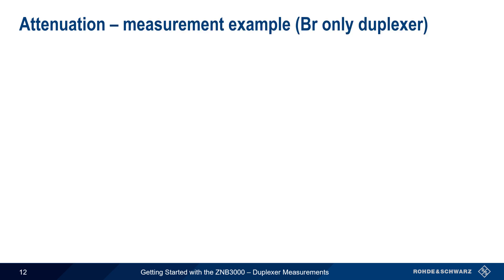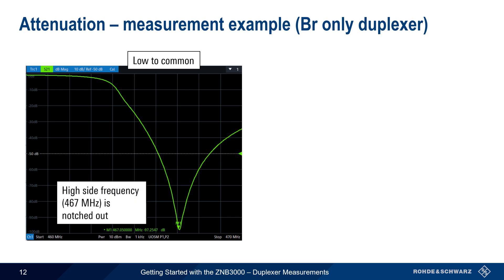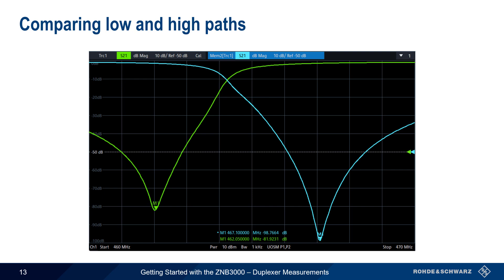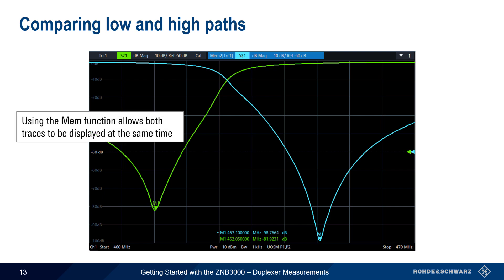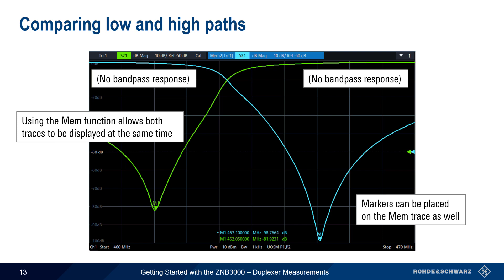Our first set of attenuation measurements are on a band reject only duplexer. Measuring S21 from the low port to the common port, we see a very clear and very deep notch at the high side frequency — here 467 MHz. Measuring from high to common, we see a similar notch at the low side frequency of 462 MHz. Markers can easily be placed at the minimum of each trace to obtain both frequency and level values for each notch. Using the trace memory function, both traces can be displayed simultaneously — the low to common path in blue and the high to common path in green. Note that neither of these paths has any kind of band pass response outside of the notch.